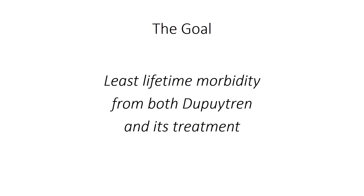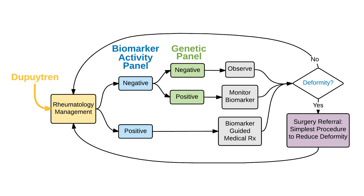The goal of treating Dupuytren disease is to have the least lifetime morbidity from both Dupuytren and its treatment. This is the decision tree diagram I'd like to present: Dupuytren is recognized as a rheumatologic condition, the rheumatologists assess it with a biomarker activity panel, and if the patient doesn't have much current activity, they can have a genetic panel to see what their lifetime risk is, to decide whether they need ongoing monitoring. If they have a high level of activity according to their biomarker, they can have biomarker-guided disease-specific medical treatment — all done at the rheumatologist's.